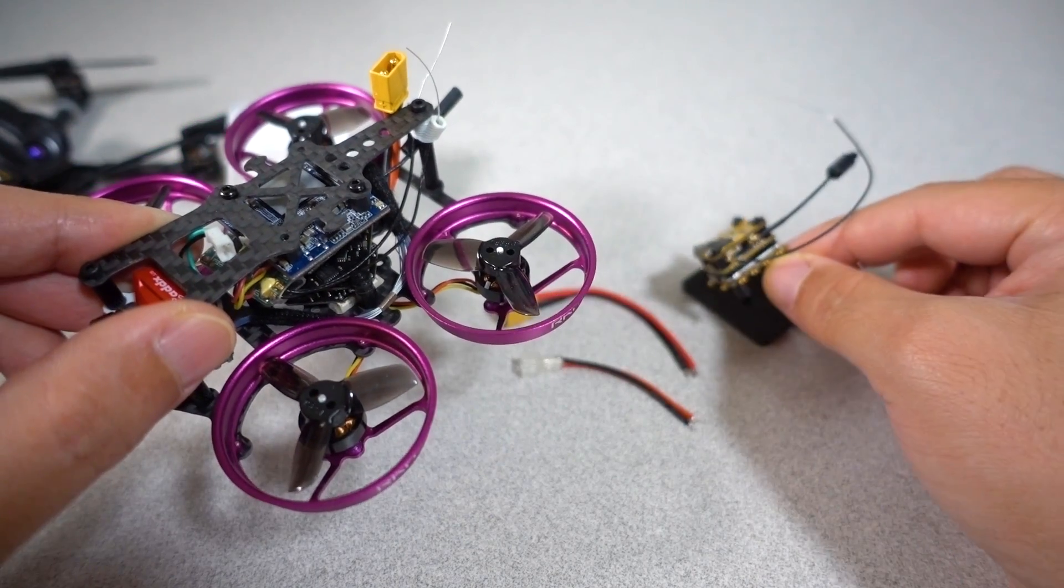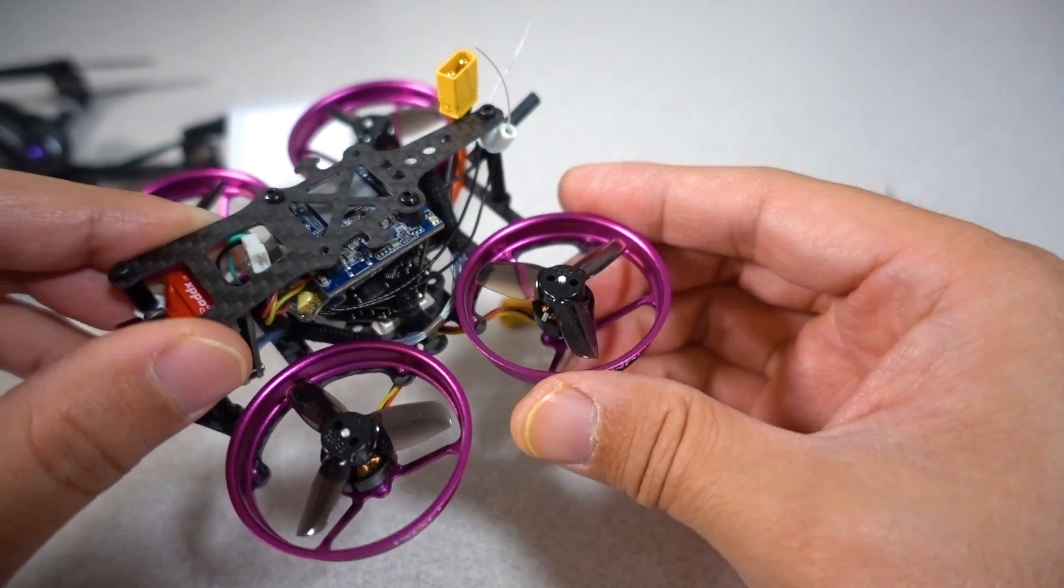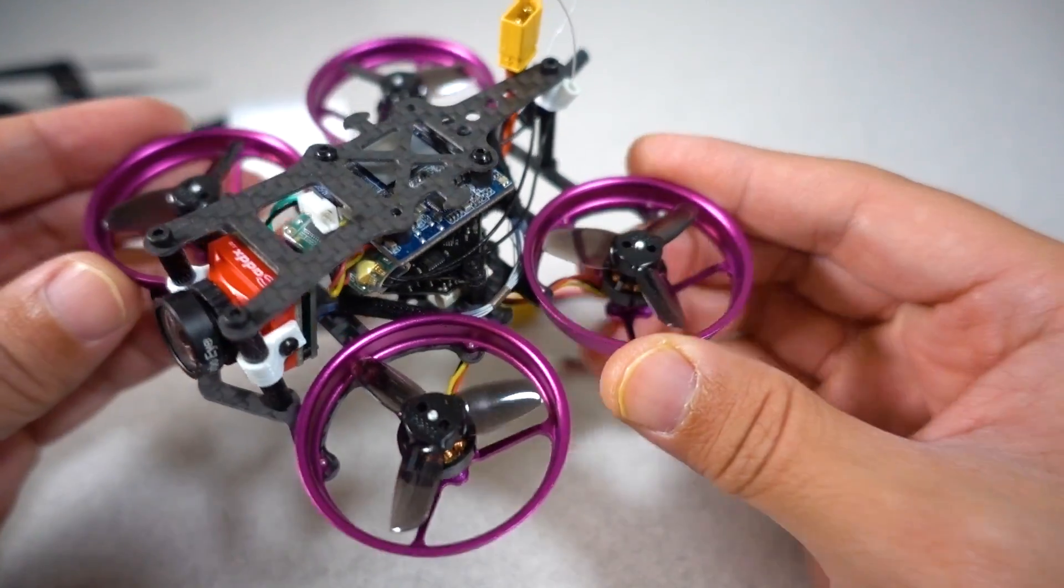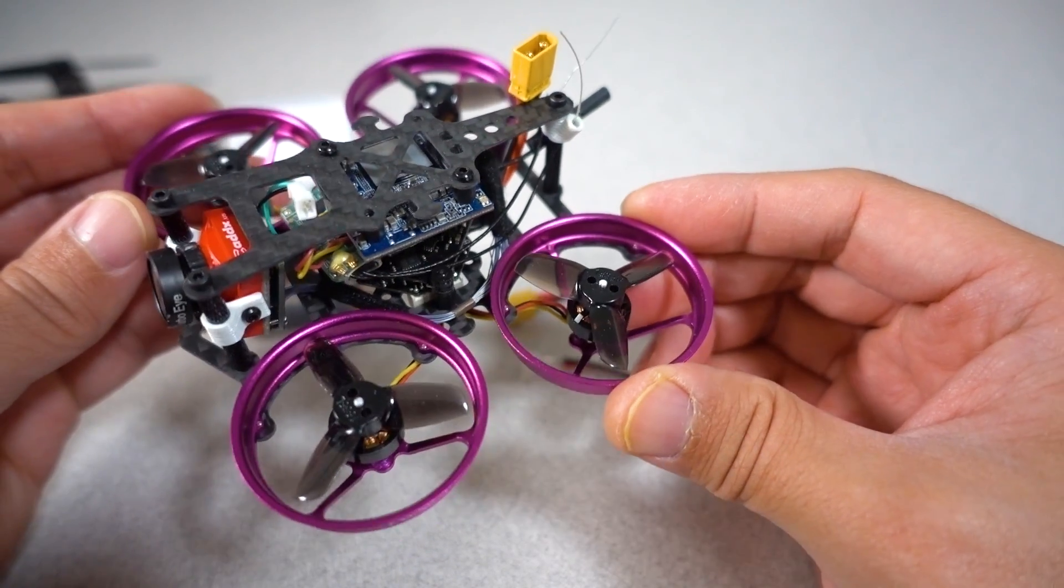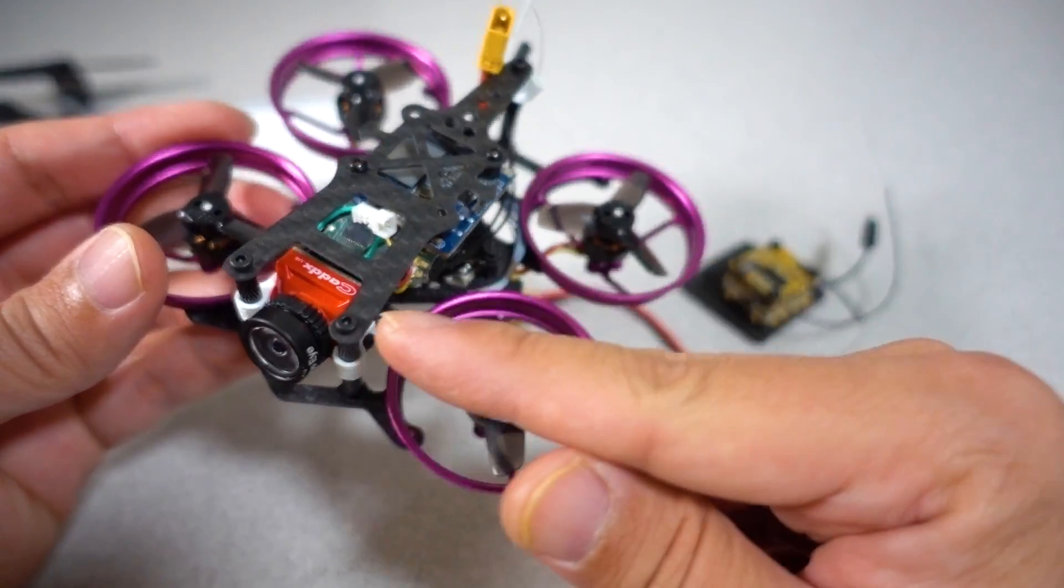my Beta 75X ESC board has been getting some twitching over time, it's been getting worse and worse, and obviously causes jello in the video.